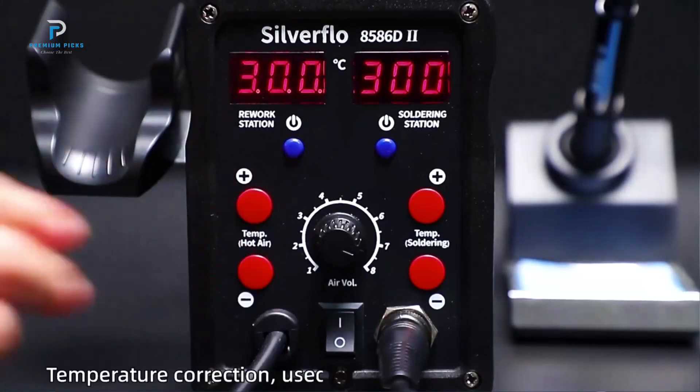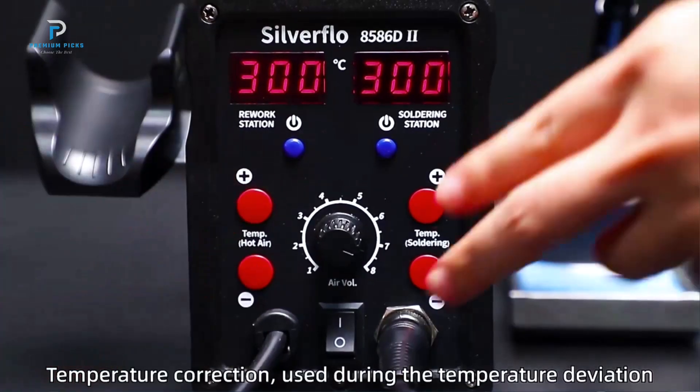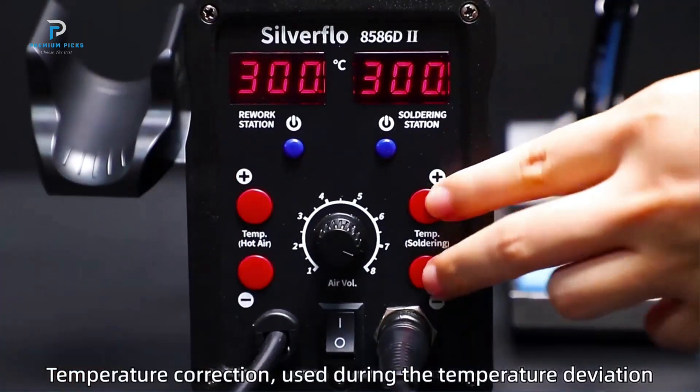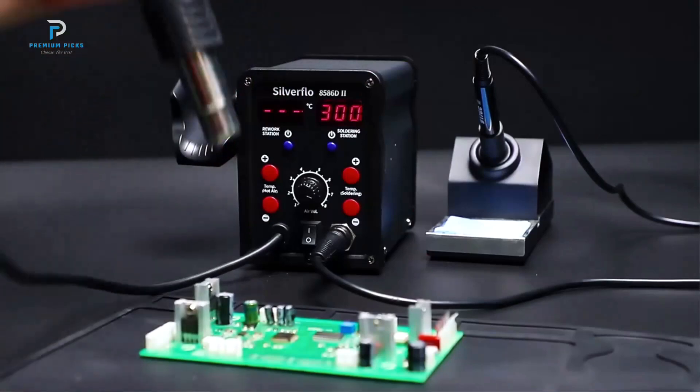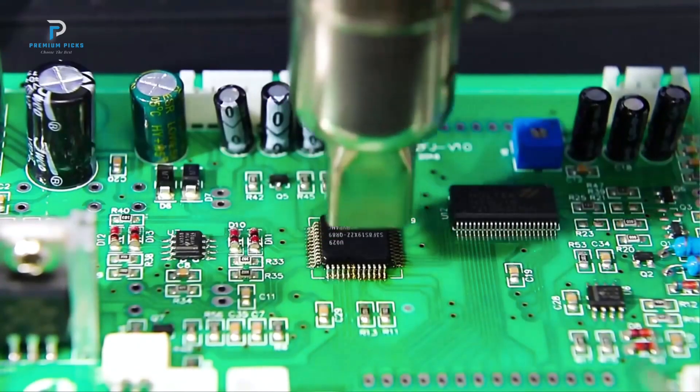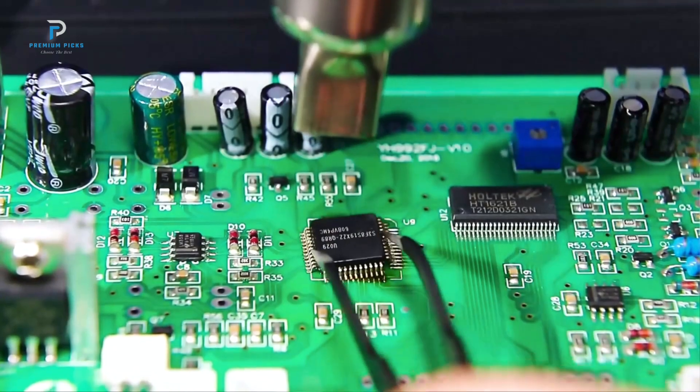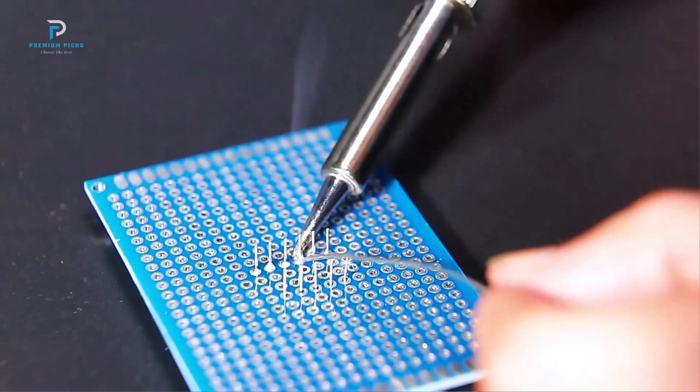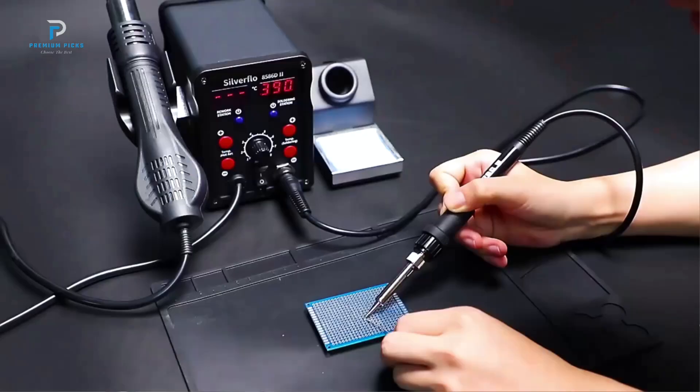With a 750-watt rated power supply, the Silverflow 8586D offers excellent temperature control. The hot air gun reaches temperatures from 100 degrees to 480 degrees Celsius (212 degrees to 896 degrees Fahrenheit), making it perfect for various tasks from fine SMD components to larger connections. The soldering iron operates between 200 degrees to 480 degrees Celsius.